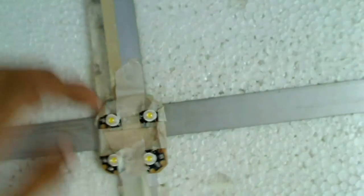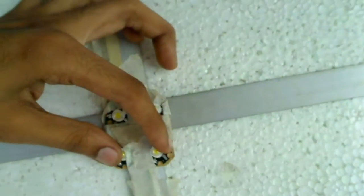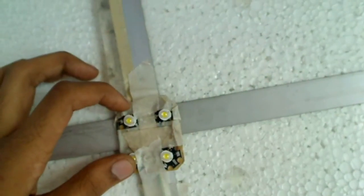So LEDs are connected like this. These two are in series and these two are in series, and two such chains are connected in parallel. So these are connected through this wire to these regulators.